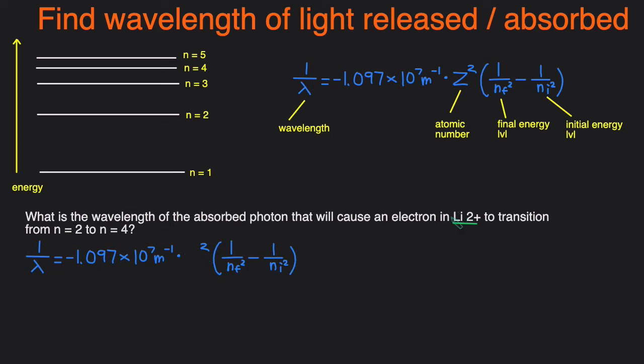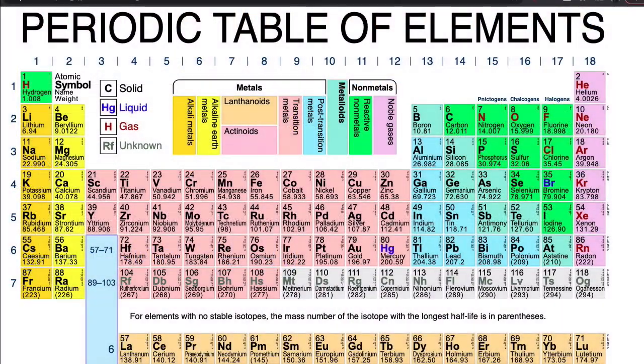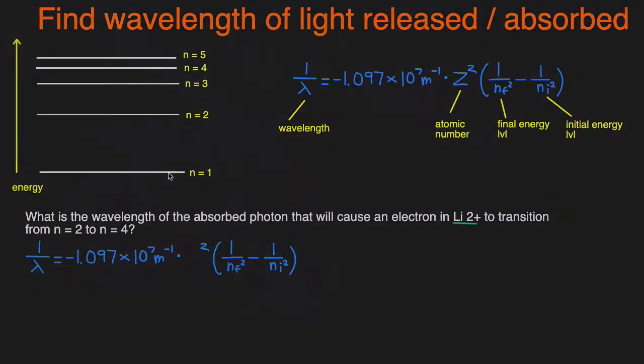I'll copy Rydberg's equation over here then let's replace the variables. This time it's lithium instead of hydrogen, so we have to use the atomic number of lithium and that is 3. So replace Z with 3. The final energy level is 4 and the initial energy level is 2.